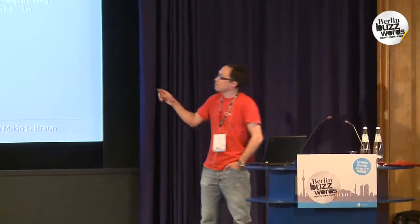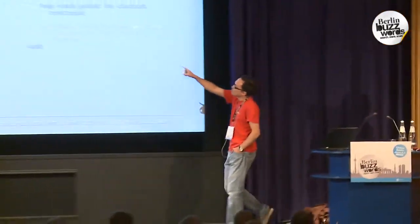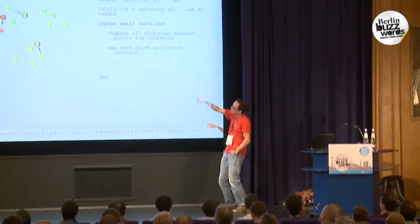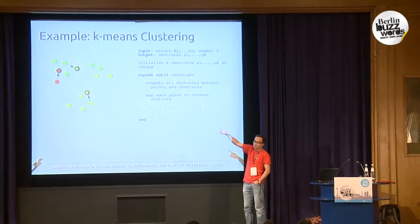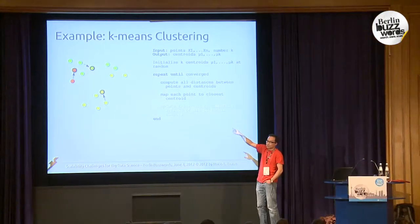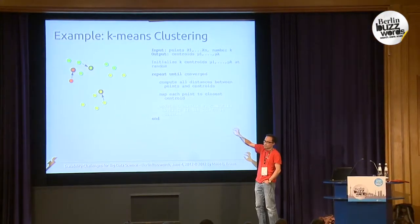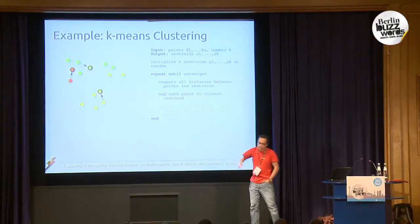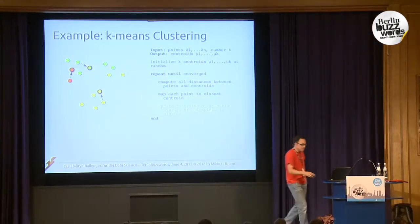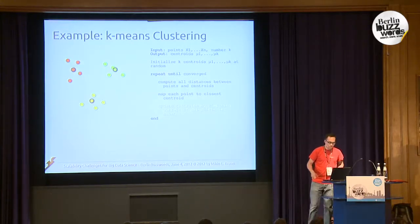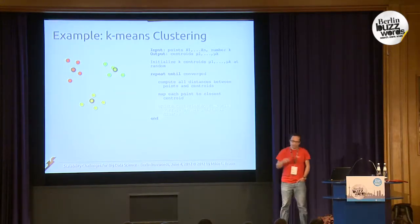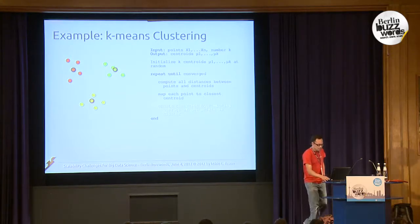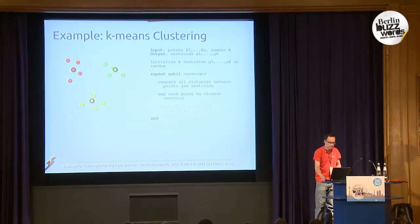The green centroid moves a bit to the right, the yellow one also, but the red one is already in a good position as the middle point of the upper-left cluster. You iterate this and eventually it converges. This is actually an algorithm that is very easy to parallelize because all the computations can be parallelized easily.